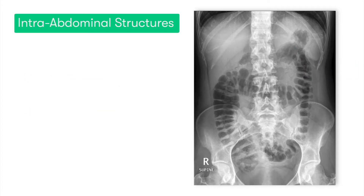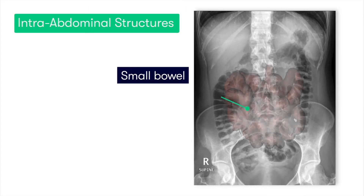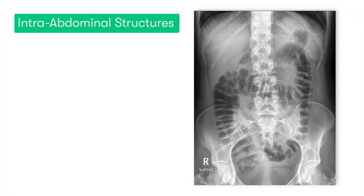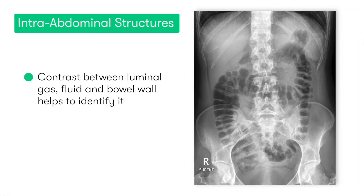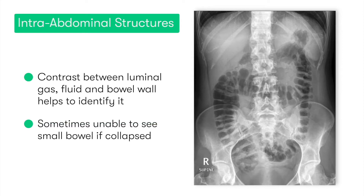Moving distally on from the stomach, we have the small bowel, which we can find lying centrally in our abdominal x-ray. Similar to the case with the stomach, we may be able to see the small bowel because of the contrast between the luminal gas, the fluid, and the wall of the bowel. However, it's not uncommon that we're actually unable to see the small bowel because the bowel is collapsed.